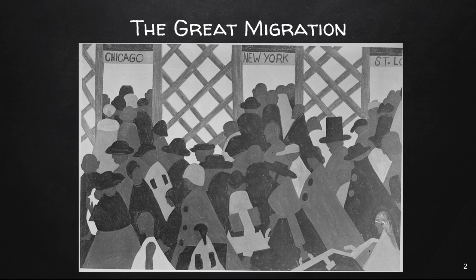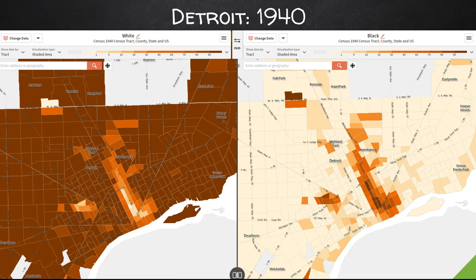In 1910, the African American population in Detroit was roughly 9,000. But by 1970, it was roughly 754,000 people. In 1940, the population of African Americans in Detroit had grown from about 9,000 in 1910 to about 167,000 — an increase of almost 160,000 African Americans.